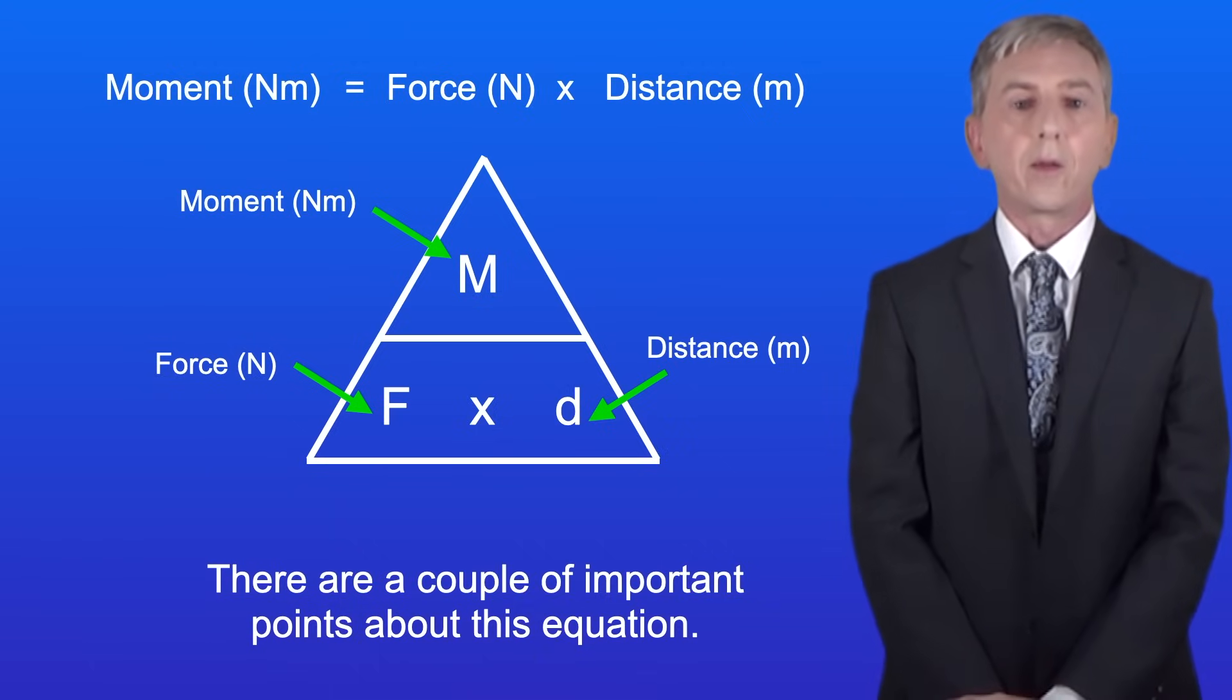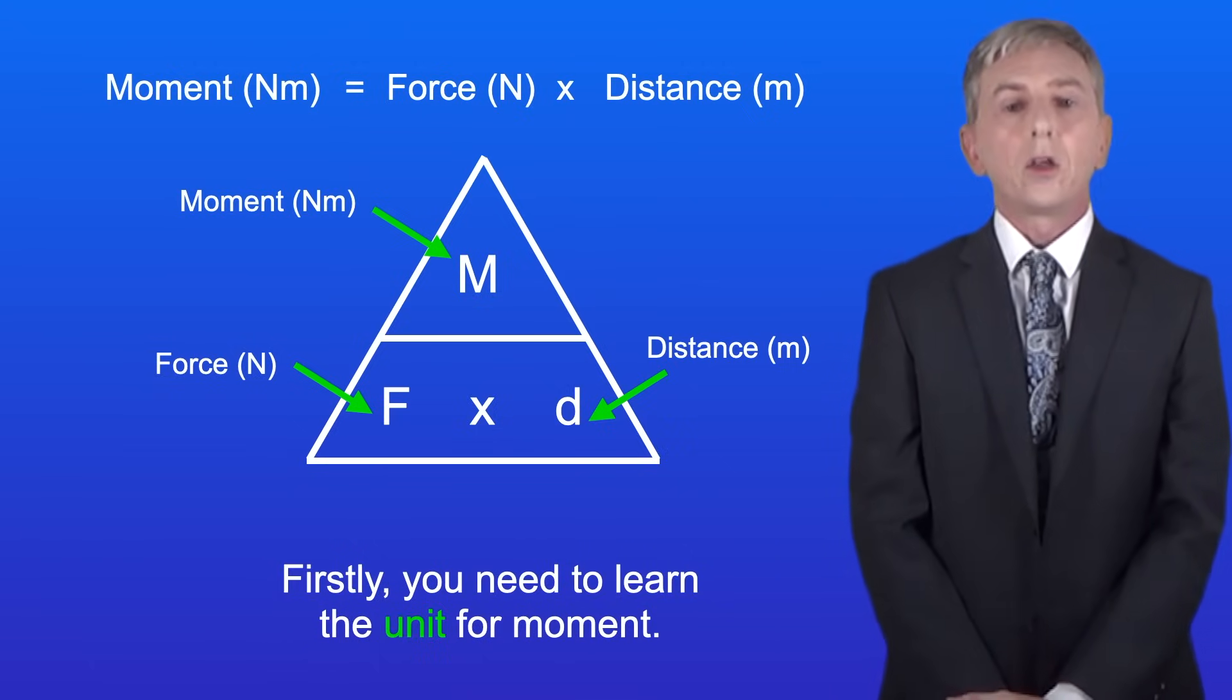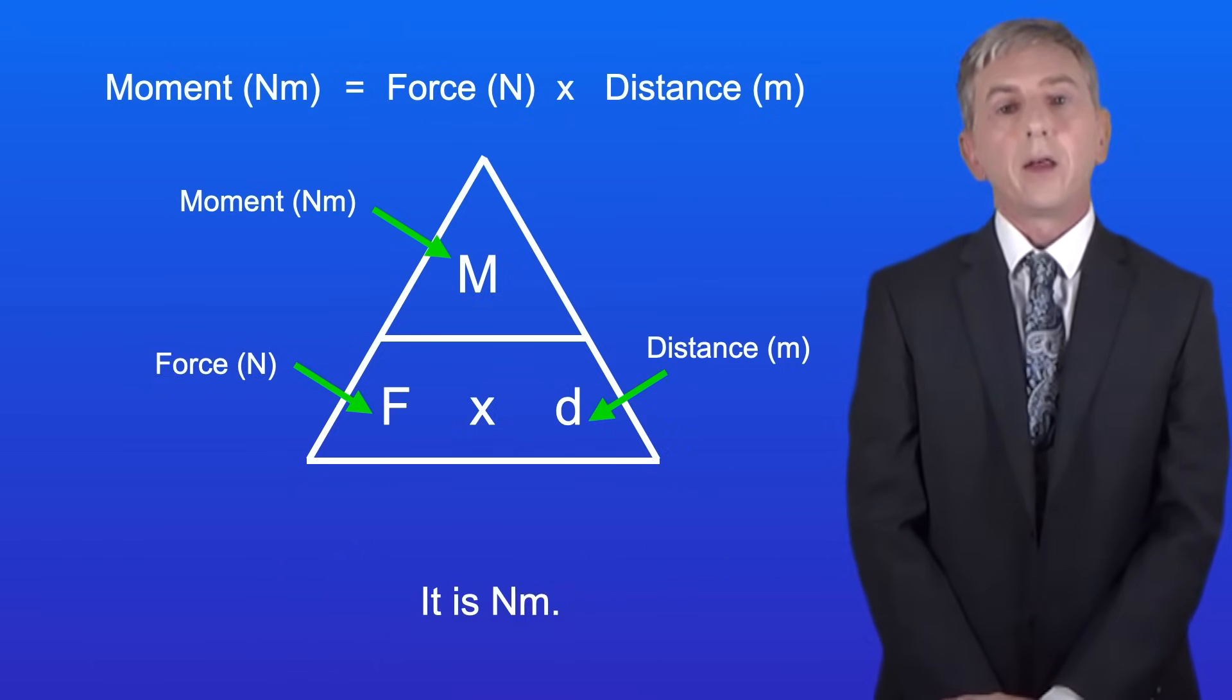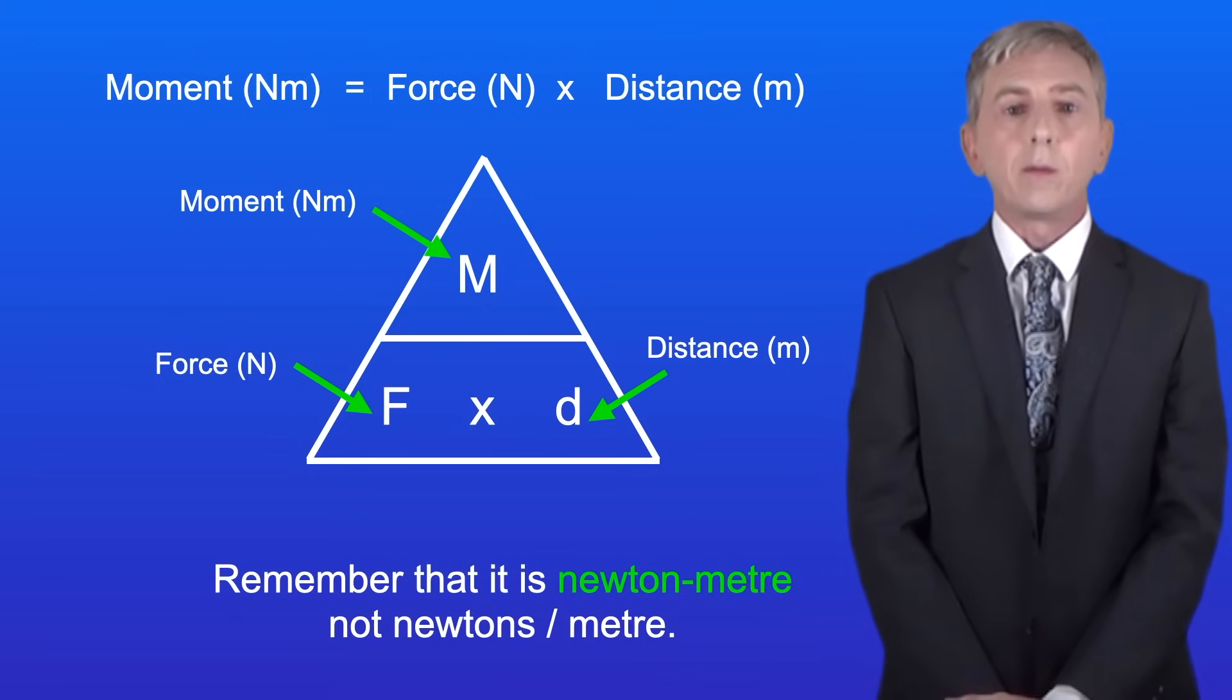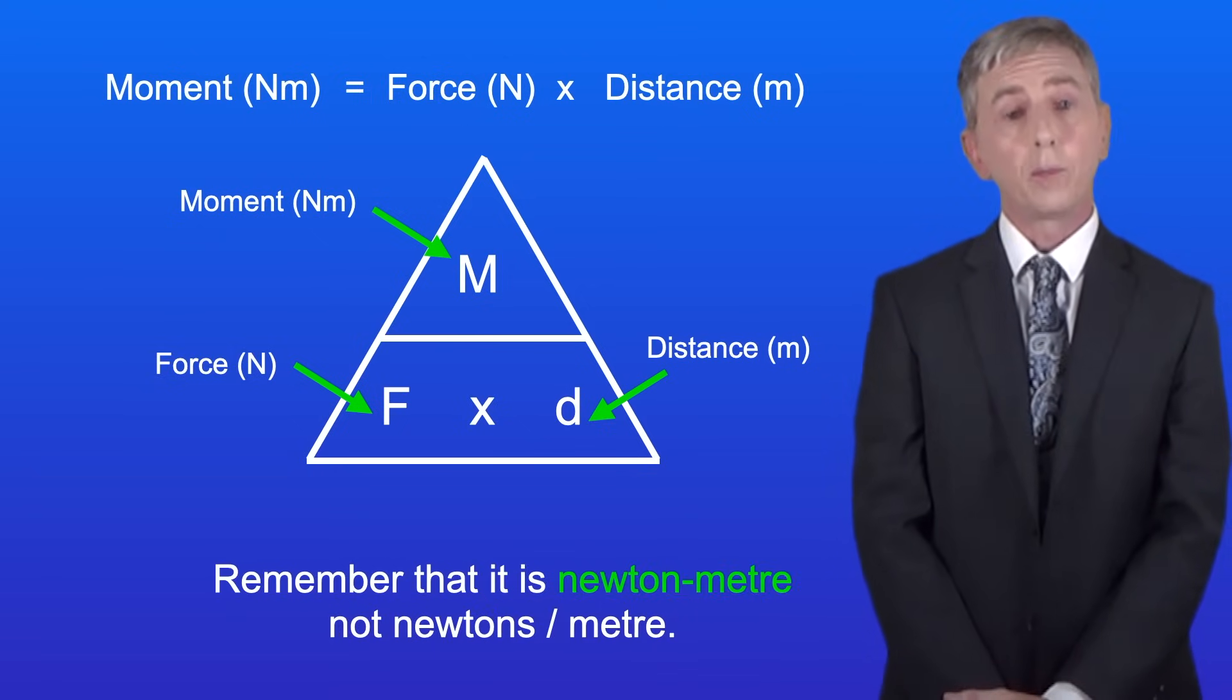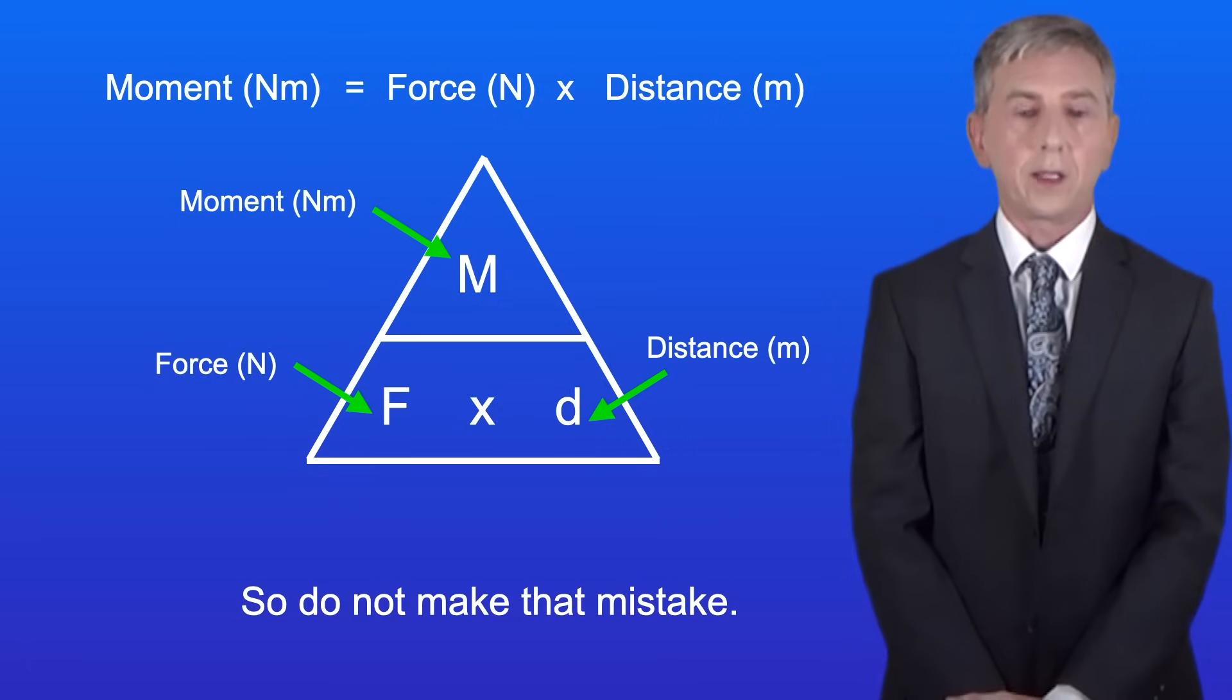Now there are a couple of important points about this equation. Firstly you need to learn the unit for moment. It's capital N followed by lowercase m. Anything else is wrong and you won't get the mark in the exam. Also remember that it's newton meter not newtons per meter so don't make that mistake.